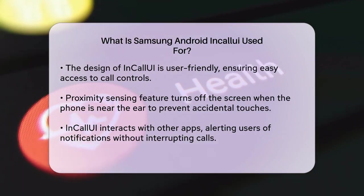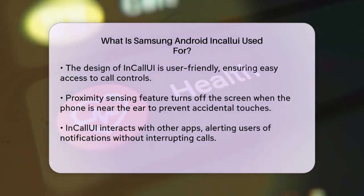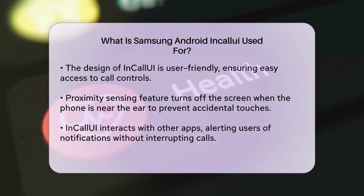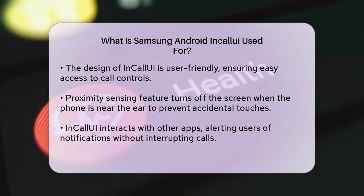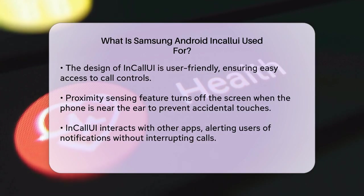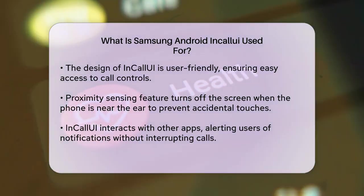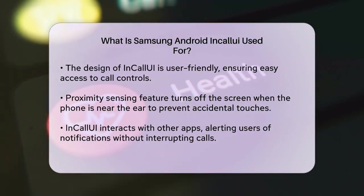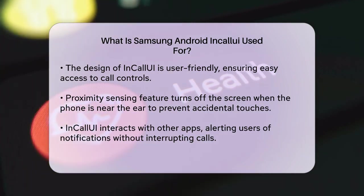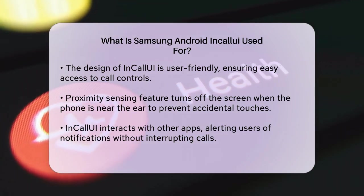InCall UI interacts with other apps on your phone as well. For instance, if you receive a text message or notification during a call, InCall UI makes sure you're alerted without disrupting your conversation. It also works closely with the dialer app, the phone's core functionality, and the contacts app to provide a seamless calling experience.